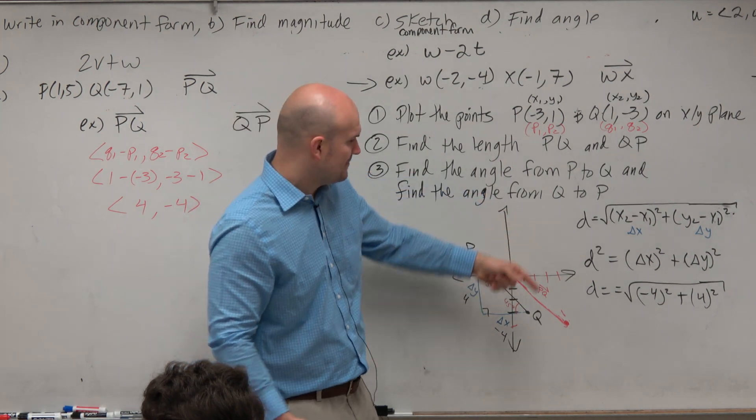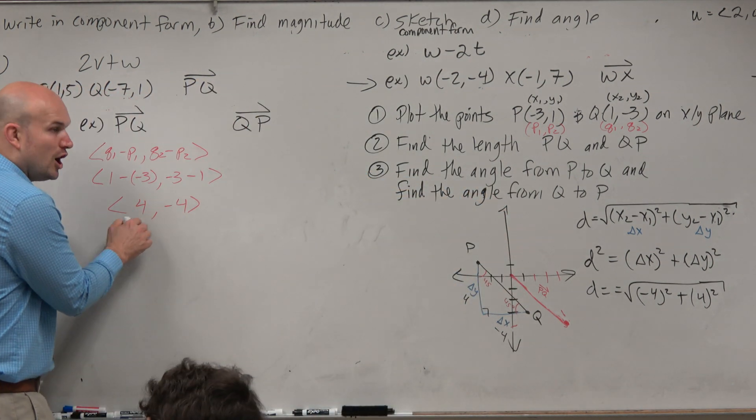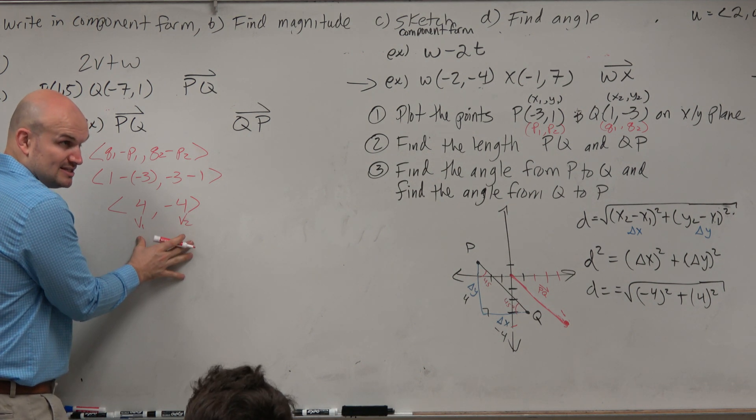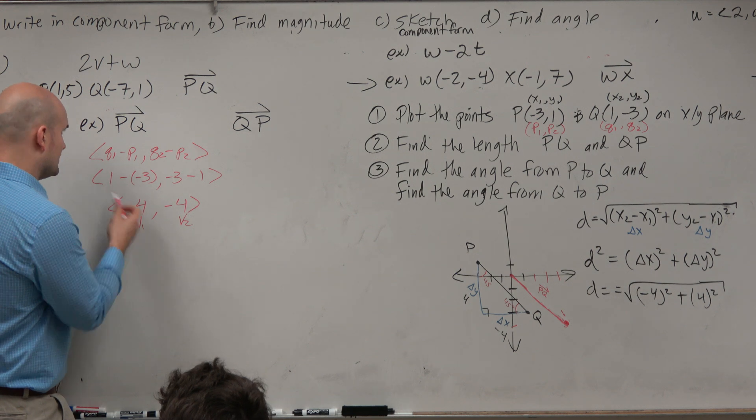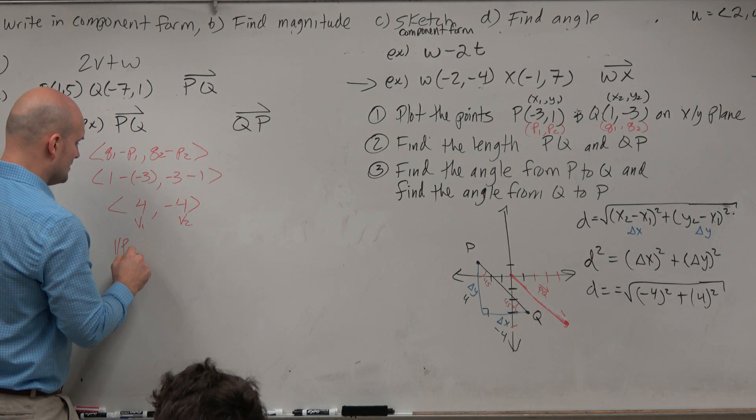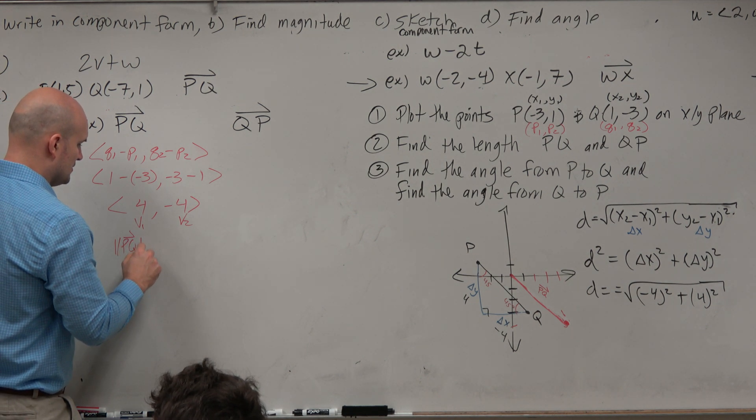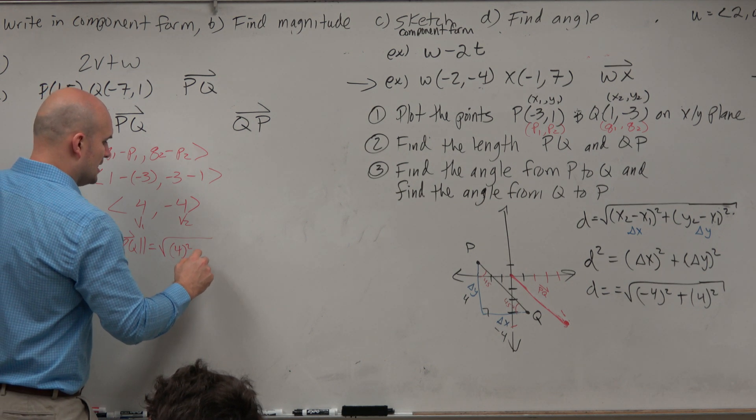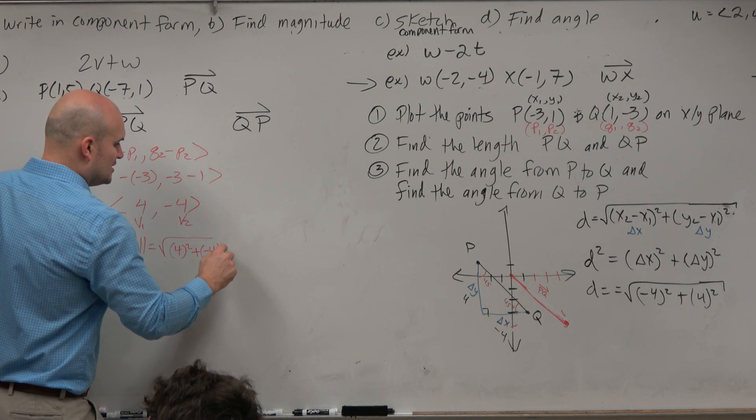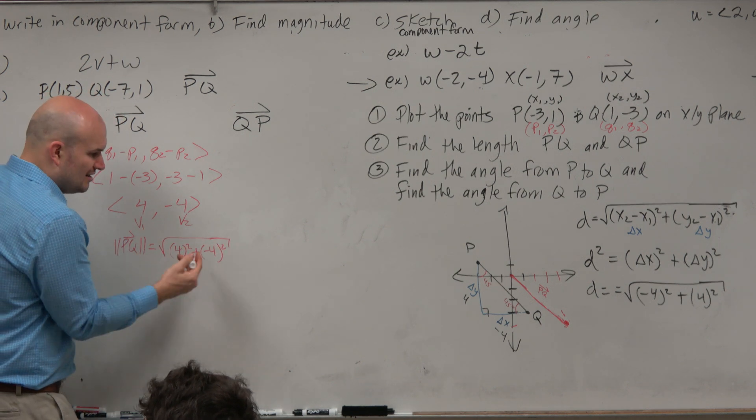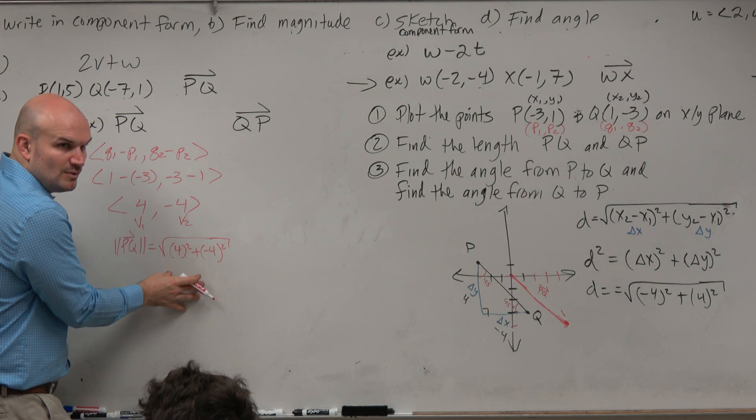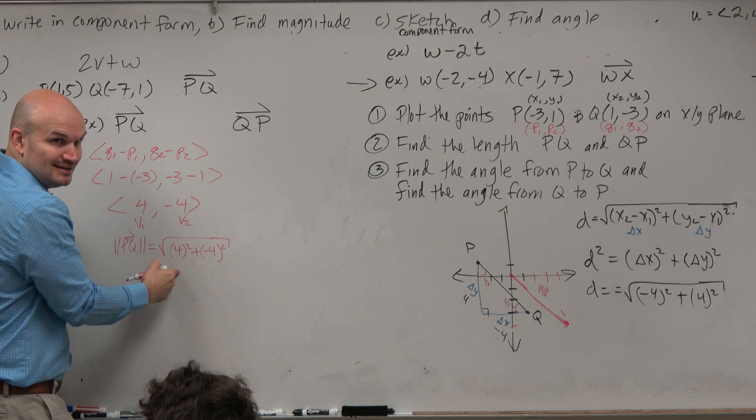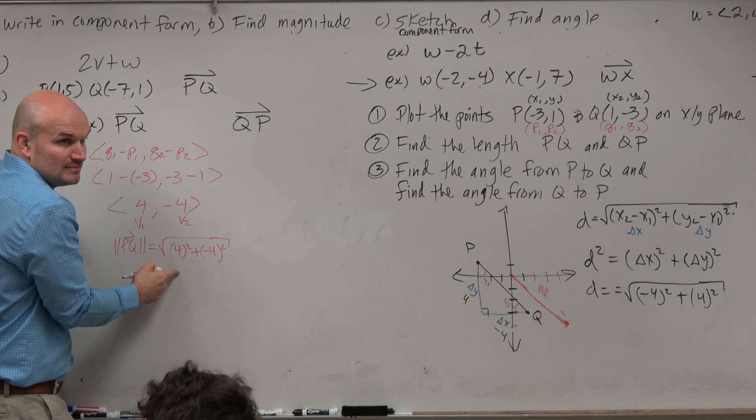You can just count, and basically what you recognize is this is v1, this is v2 of your components. So therefore, the magnitude of PQ is just the square root of 4 squared plus negative 4 squared. If I know what the components are, I just take the square root of the sum of their squares. I just square them, add them, and take the square root. It's really easy. So we like component form.